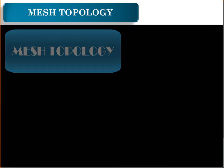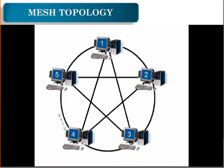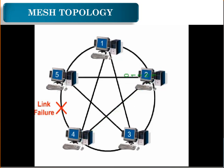Mesh topology — a network setup where each computer and network device is interconnected with one another, allowing for most transmissions to be distributed even if one of the connections goes down. This topology is not commonly used for most computer networks as it is difficult and expensive to have redundant connections to every computer.